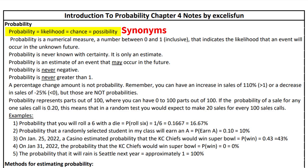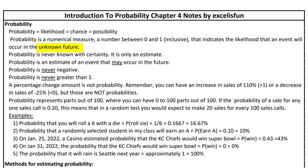Probability is a numerical measure — a number between 0 and 1, inclusive — that indicates the likelihood that an event will occur in the unknown future. Unknown future is key because probability is never known with certainty; it's only an estimate.